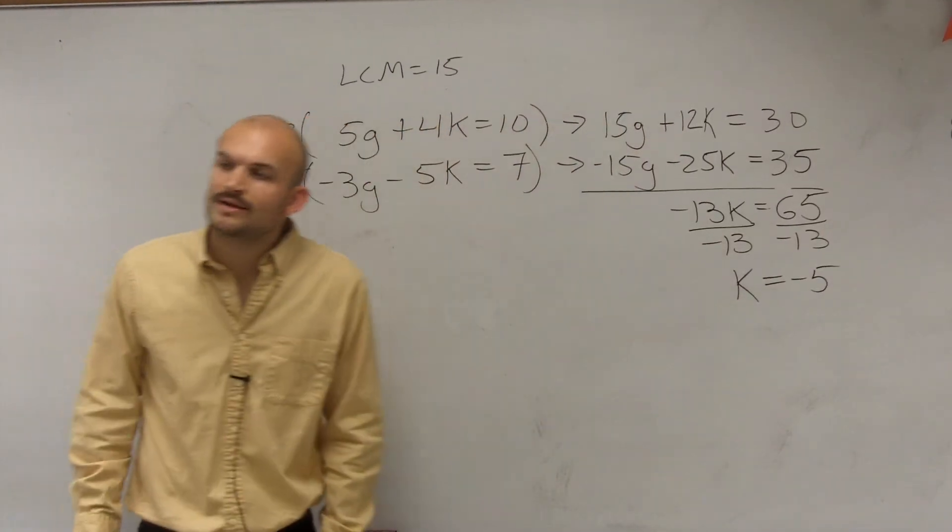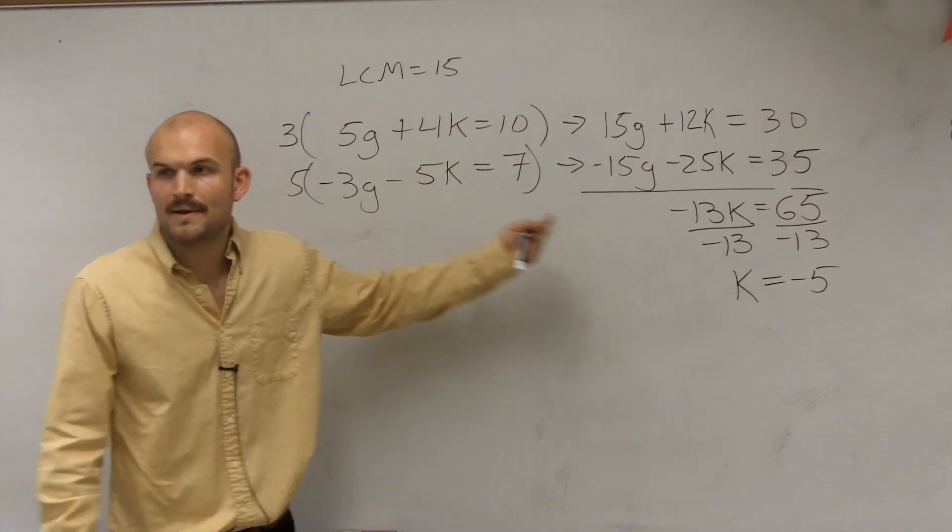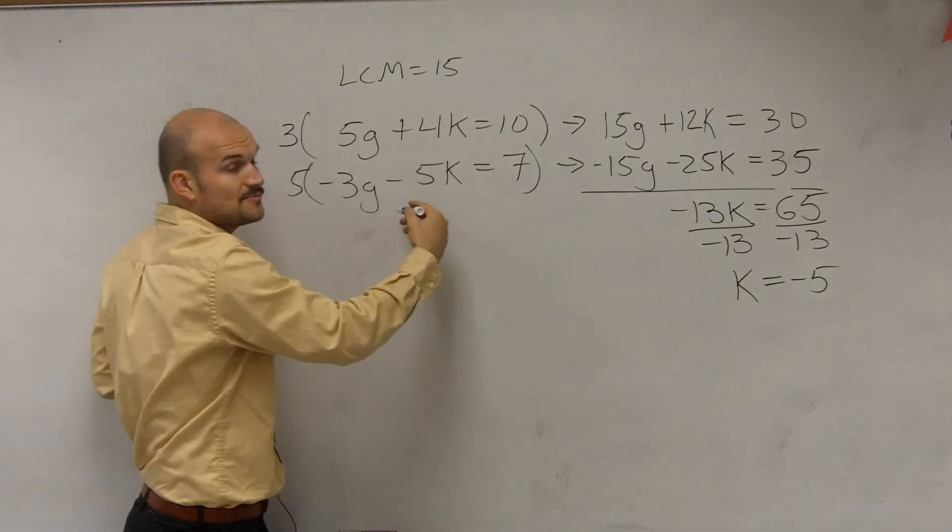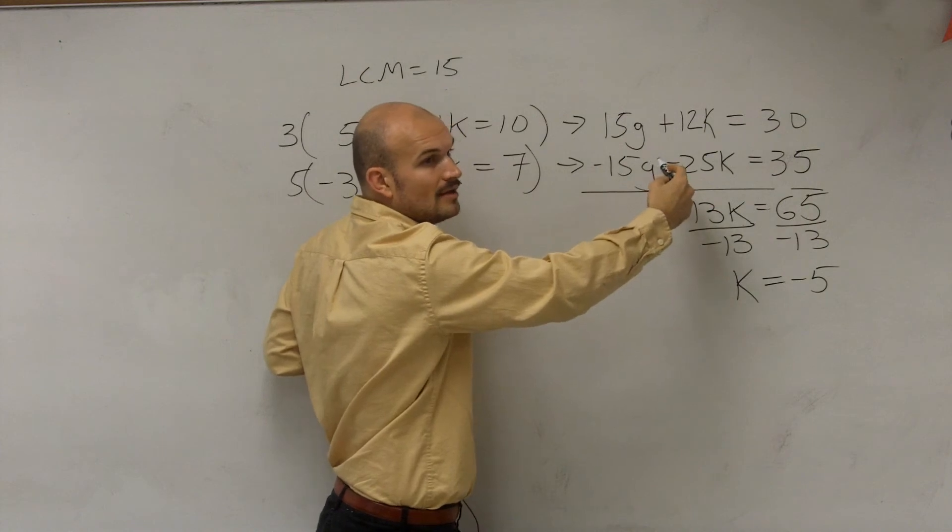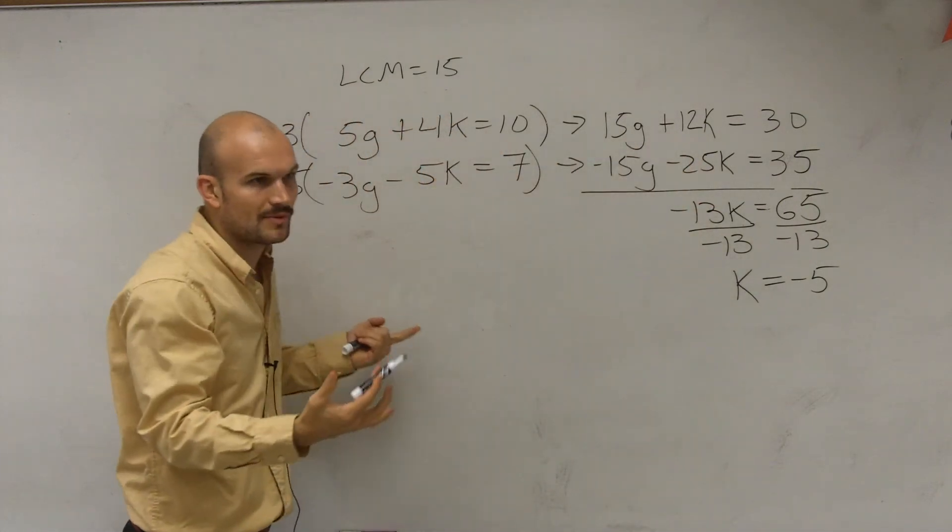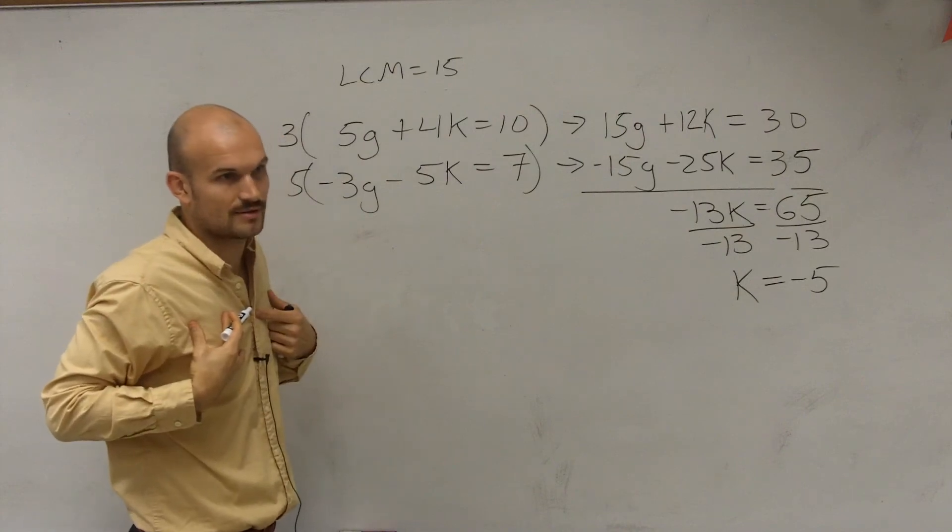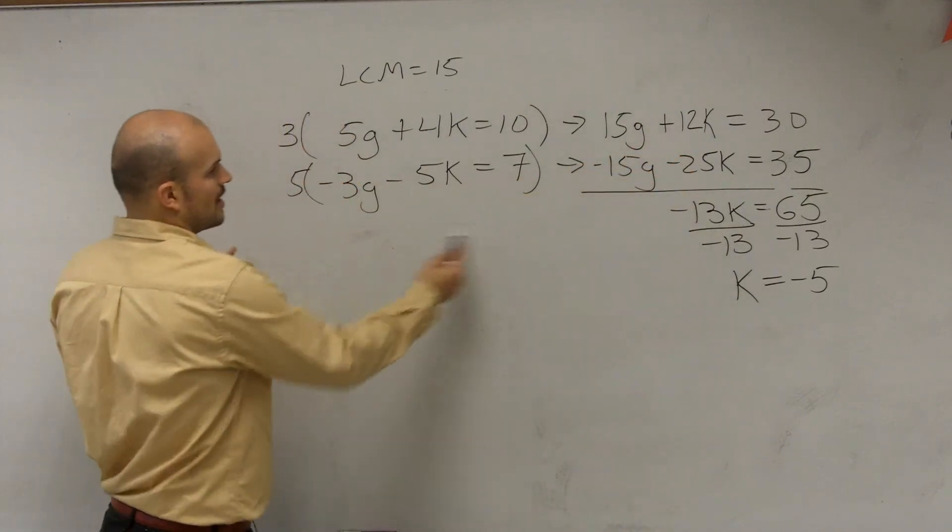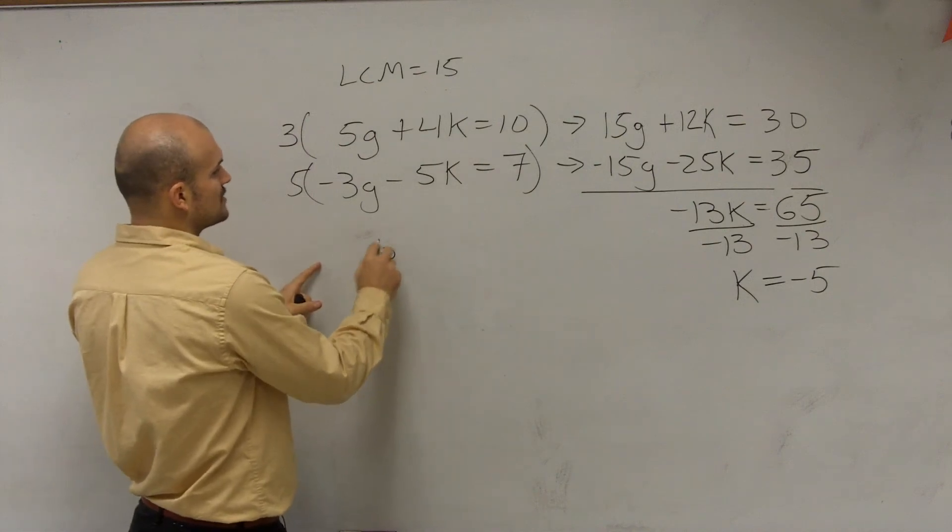Now, once you determine what negative 5 is, you plug that back into one of your other equations. It doesn't matter which one. You could plug it into this one or you could plug it into these two, right? But I would say these would be the easier ones because they're just dealing with smaller numbers. So to me, it's less work. But you can plug them into this one if you want to. So here, I multiply k into negative 5. So I'll use the top equation.